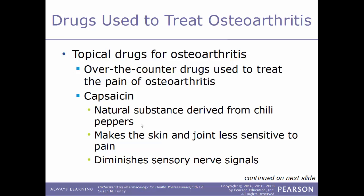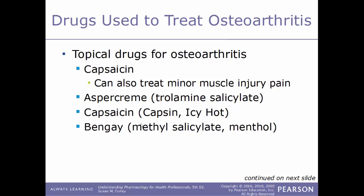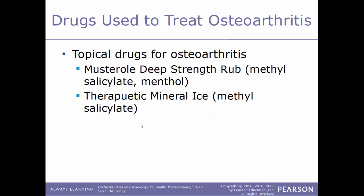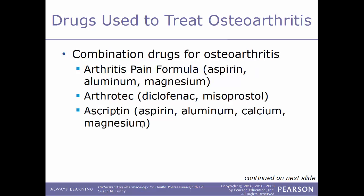Some topical over-the-counter drugs are used to treat the pain associated with osteoarthritis. An example is capsaicin, a natural substance derived from chili peppers that makes the skin and joint less sensitive to pain by diminishing the sensory nerve signal; it can also treat minor muscle injury pain. Examples include Aspercreme (trolamine salicylate), capsaicin products and Icy Hot, and BenGay (methyl salicylate and menthol). Other examples include Musterole Deep Strength Rub and Therapeutic Mineral Ice.